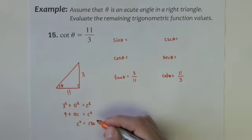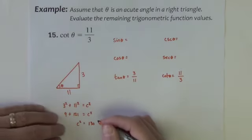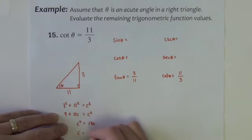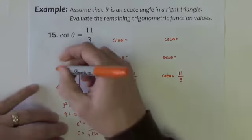So c squared is equal to 130. Let's see, 130 does not divide by any perfect squares so c is just the square root of 130.